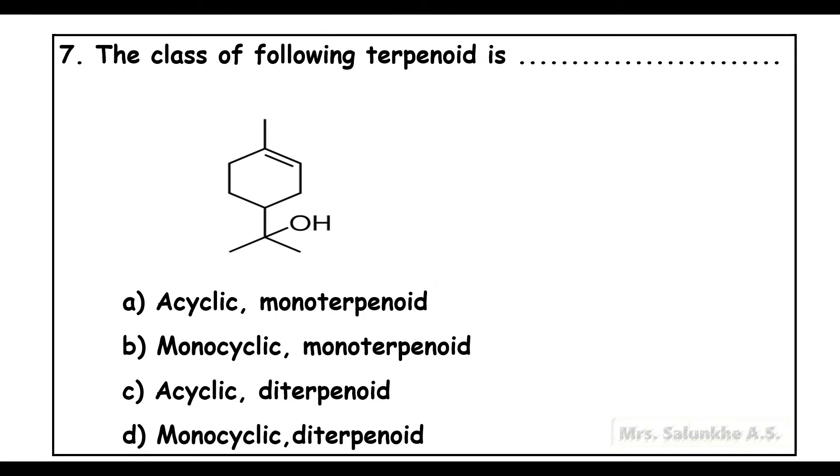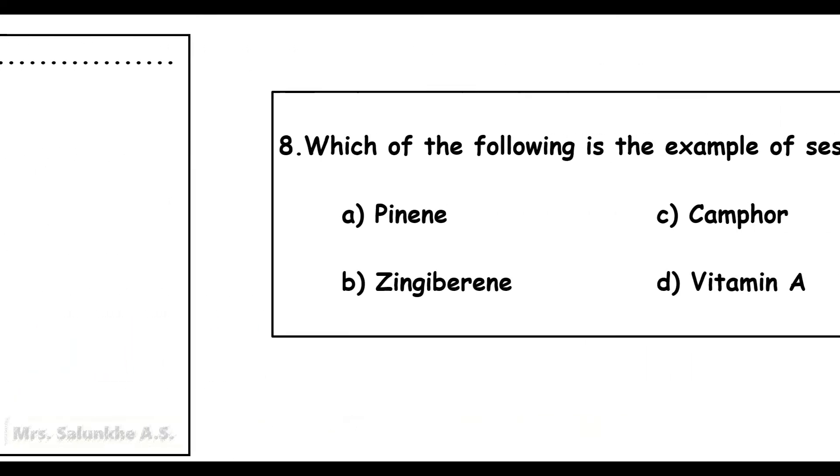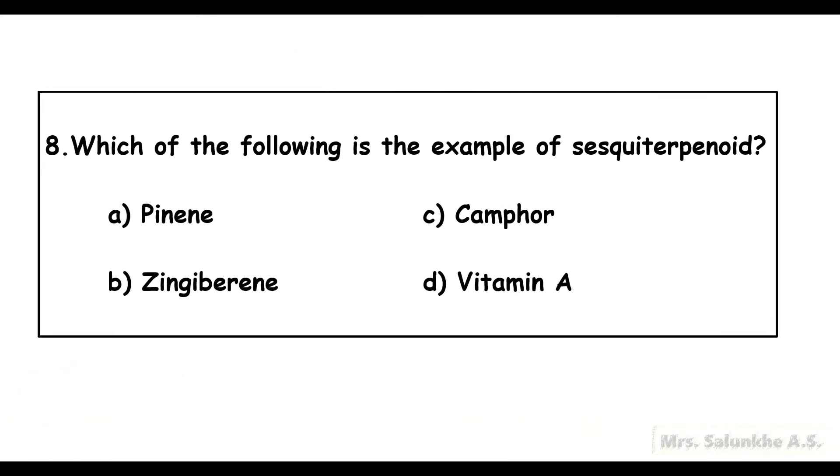The class of following terpenoid is monocyclic monoterpenoid. Which of the following is the example of sesquiterpenoid? Zingiberene.